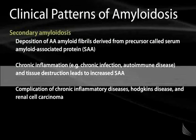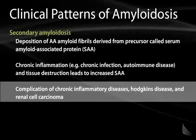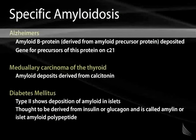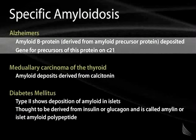Diseases such as Hodgkin's disease with its complications, or renal cell carcinoma, are conditions that may produce secondary amyloidosis. Another condition commonly associated with amyloid deposition is Alzheimer's disease, where one sees in the brains of these patients at autopsy the deposition of amyloid within the cerebrovasculature — a condition known as cerebrovascular amyloidosis.